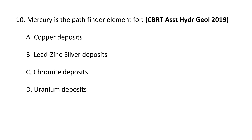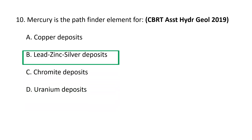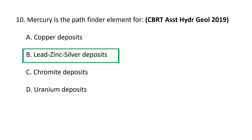Next question: mercury is the pathfinder element for — A) Copper deposits, B) Lead-zinc deposits, C) Chromite deposits, and D) Uranium deposits. Mercury is the pathfinder for lead, zinc, and silver deposits — that is, base metals. Mercury has long been regarded as a potential pathfinder for base and precious metals, and has been recognized as an indicator element for both noble and base metal deposits. B is the correct option.